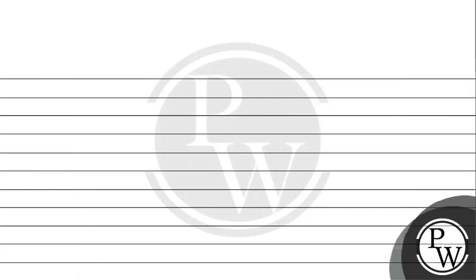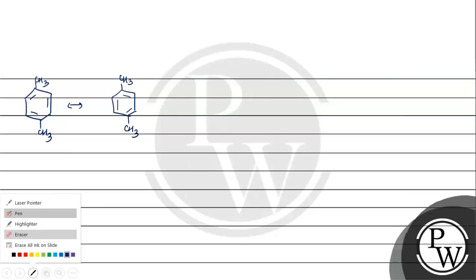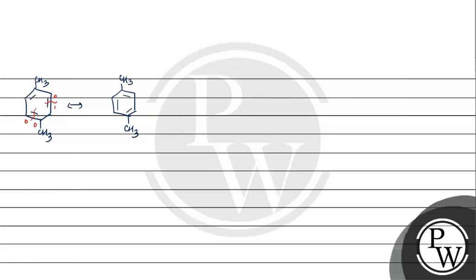So this option is incorrect — it gives the same products, not different products. Next option, we will see. Looking at the next option, you can see the difference between the two structures. If the products are different, this could be the answer.